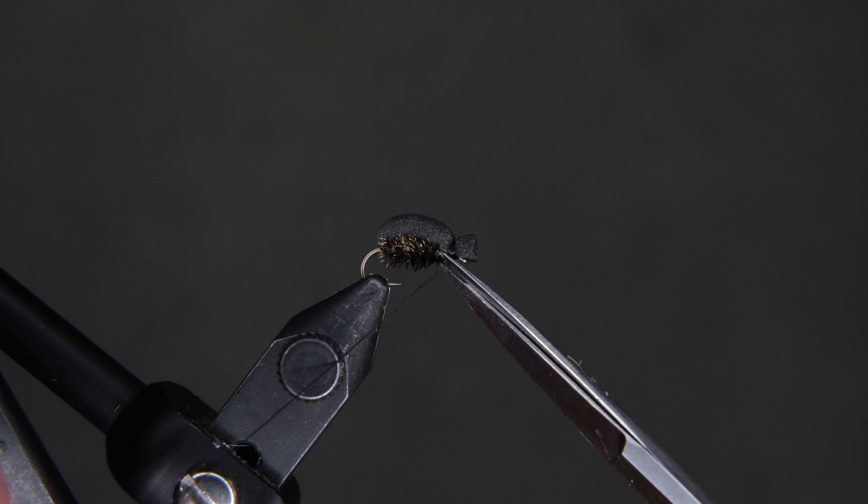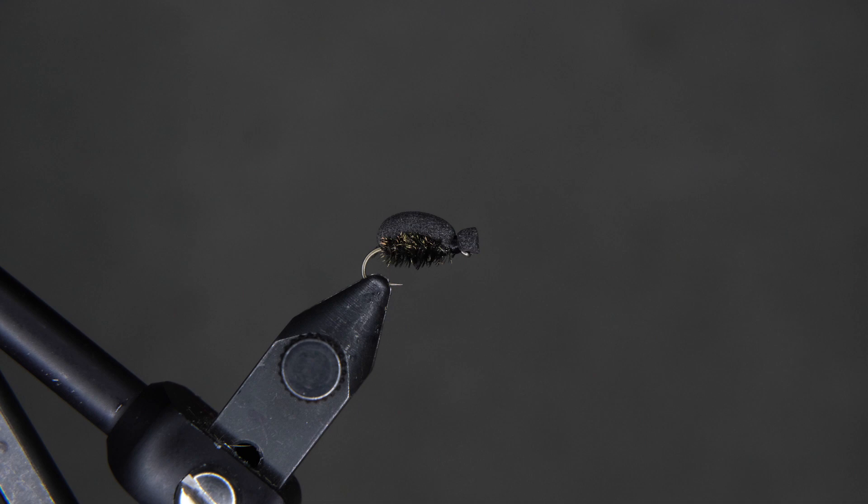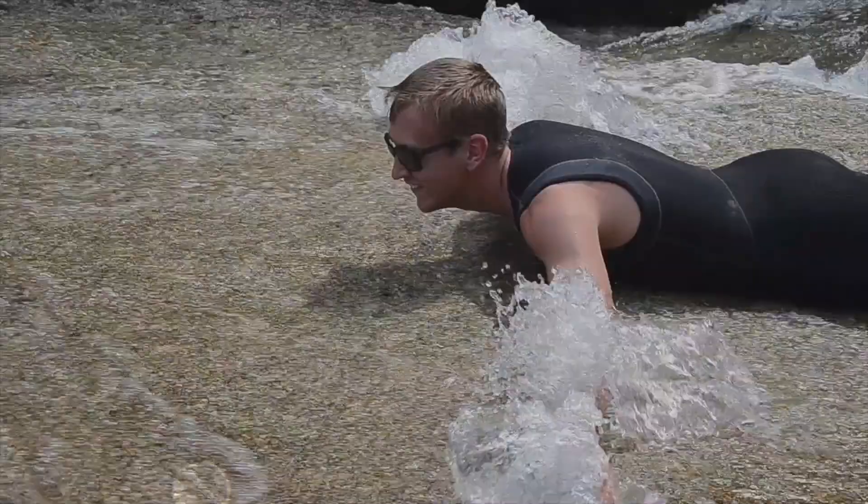Get it right next to it if you can. There you go. Now dip your bodkin in your head cement and we're going to bring it in and lay it right on top. That head cement should drip right off into the back and bleed down into the wraps and make it nice and secure. There you have our foam beetle. Thanks for watching.